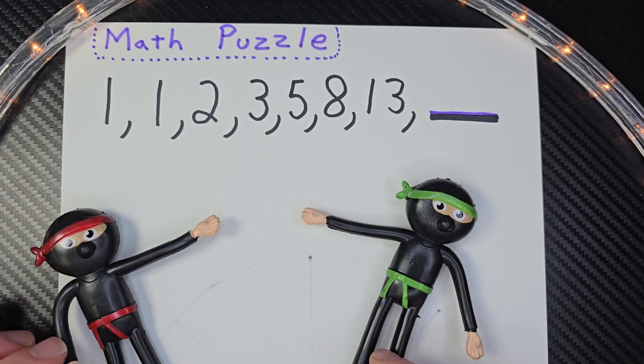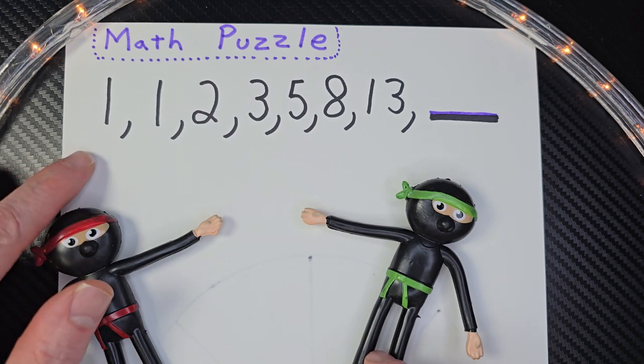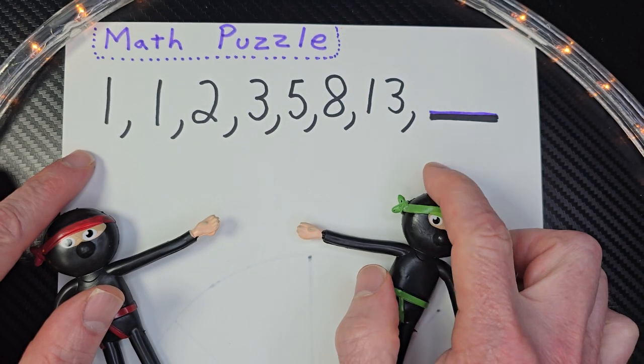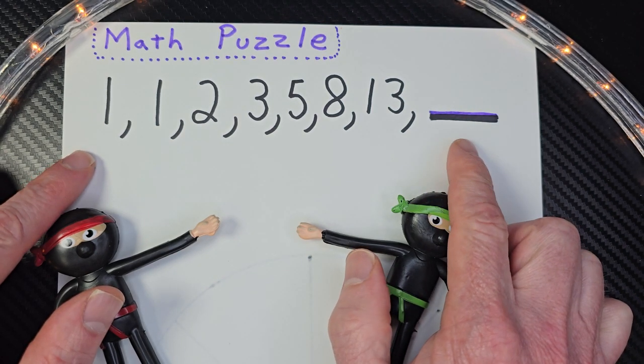All right, let's go ahead and take a look at this. I have one, and then one, two, and then three, five, eight, thirteen. And what would go next here?